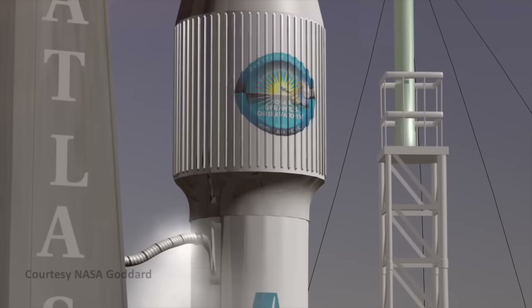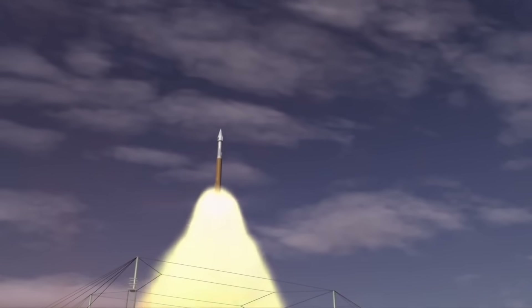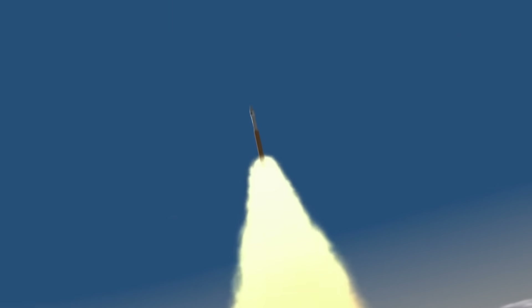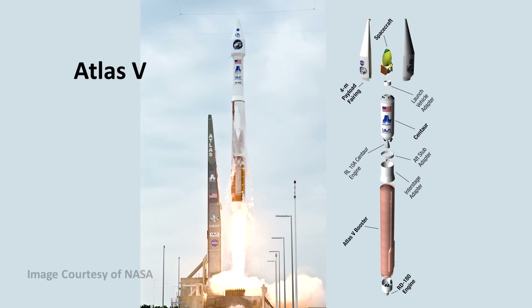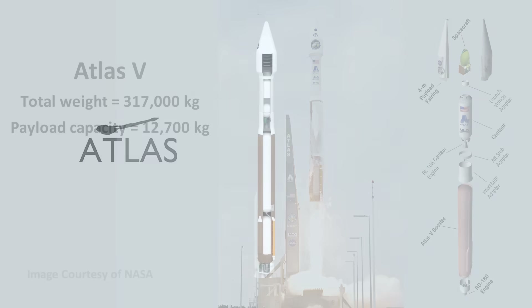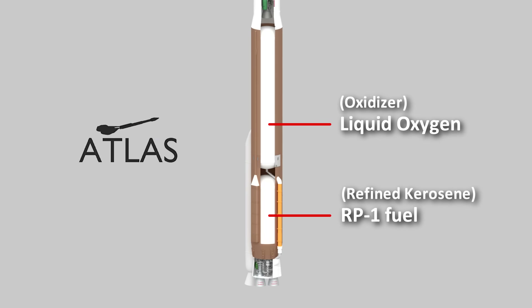How is a communication satellite inserted into orbit? The first step is to launch the satellite on a rocket with the payload capacity to carry it to orbital altitude and impart the speed necessary to maintain that orbit. In the United States, one workhorse rocket for this task has been the Atlas V. This rocket weighs about 700,000 pounds (317,000 kilograms) at launch and can lift 28,000 pounds (12,700 kilograms) to geostationary orbit. About 90% of its weight is fuel, which is typical for rockets. The main engine is powered by liquid oxygen and RP-1, a highly refined form of kerosene similar to jet fuel.